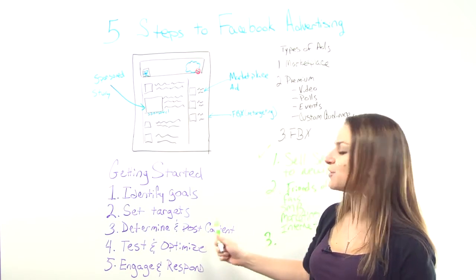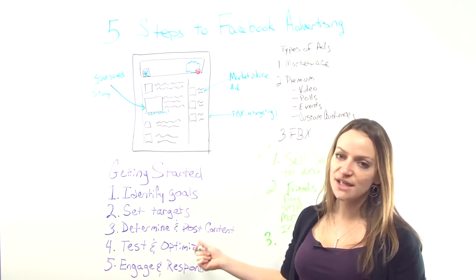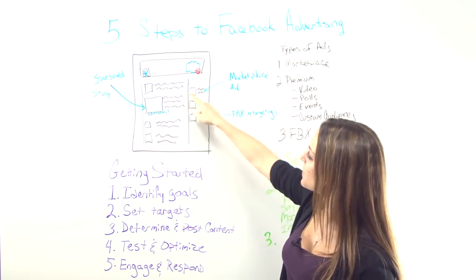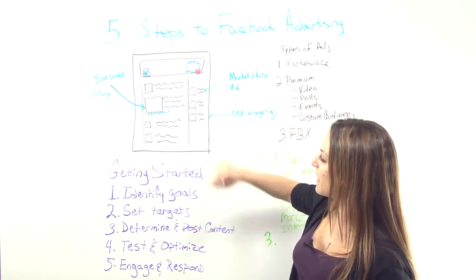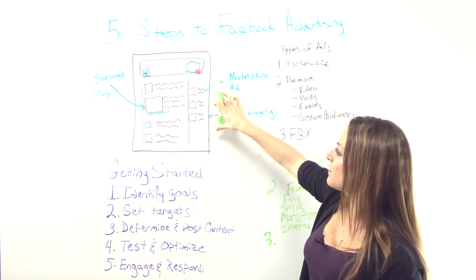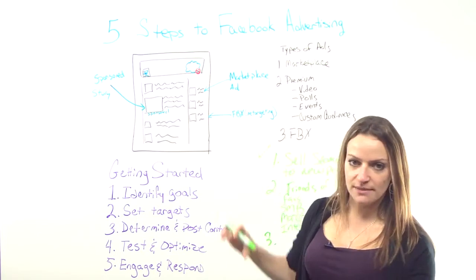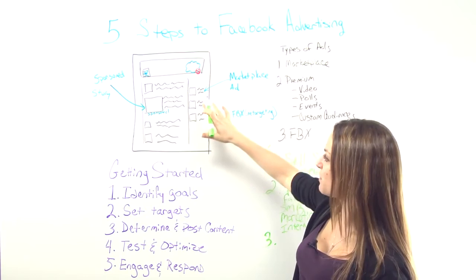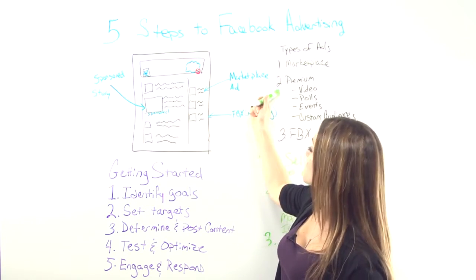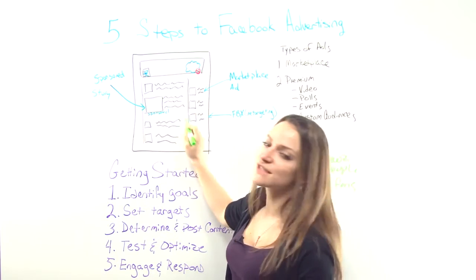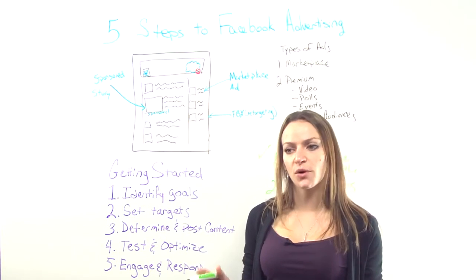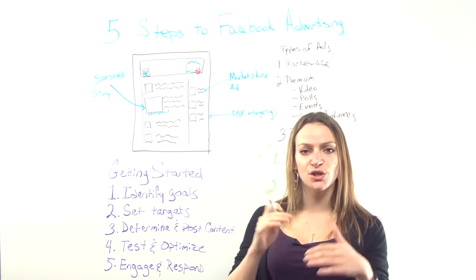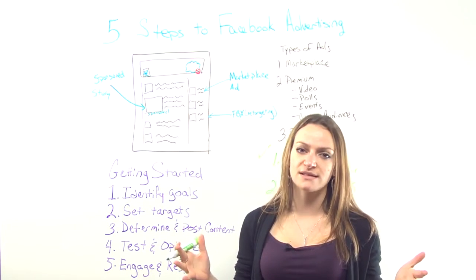You need to determine what content you're going to use and post that content. Two different options here. With marketplace ads, you get a little 50 by 50 image and about 135 characters of ad copy. You can treat this really similar to how you treat paid search or display, come up with different ad copies, and work with different stakeholders within your organization. But if you're going to do some of the premium ads with a big sponsored story, this is where it gets really interesting. A sponsored story is going to be something you post on your company's Facebook page.